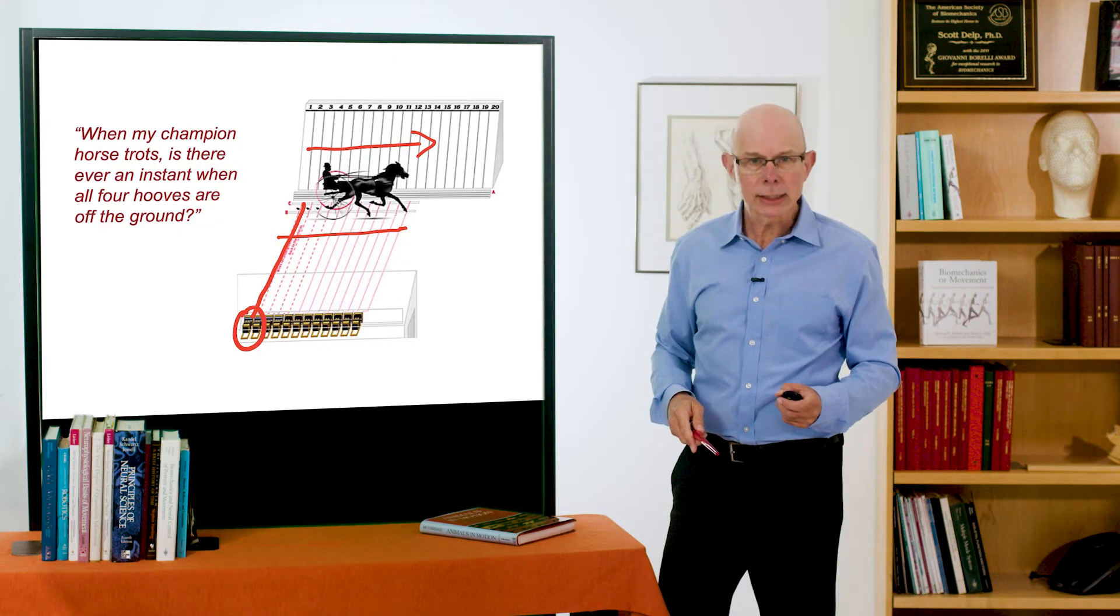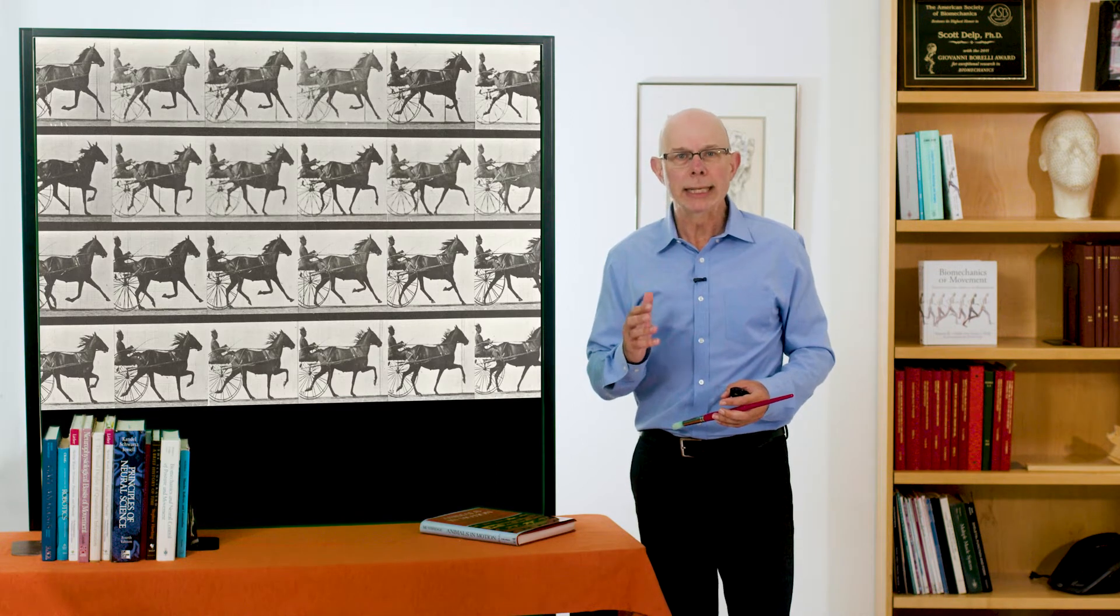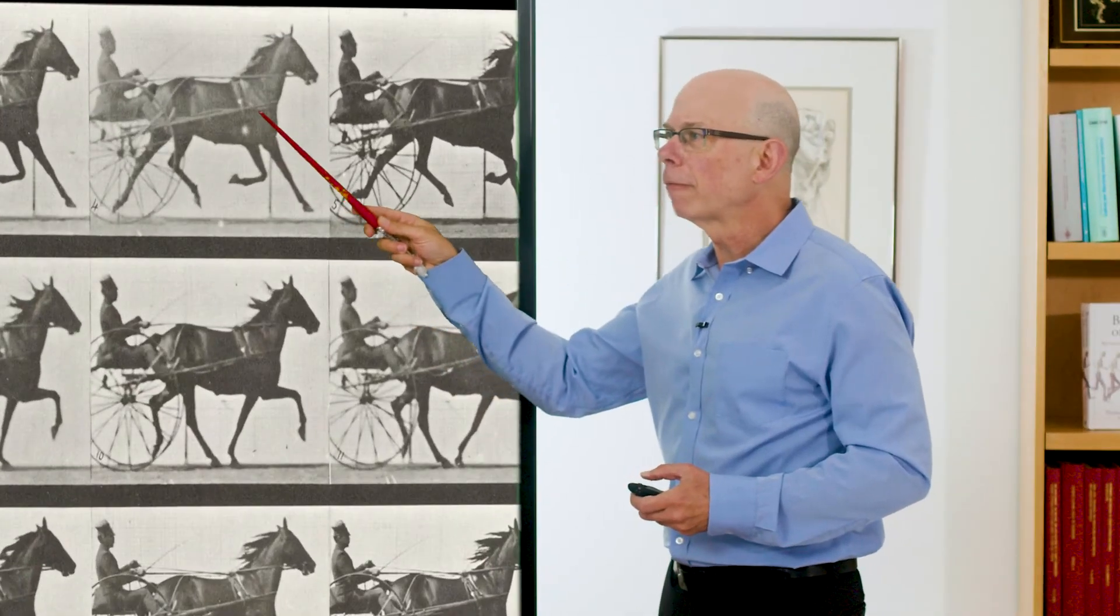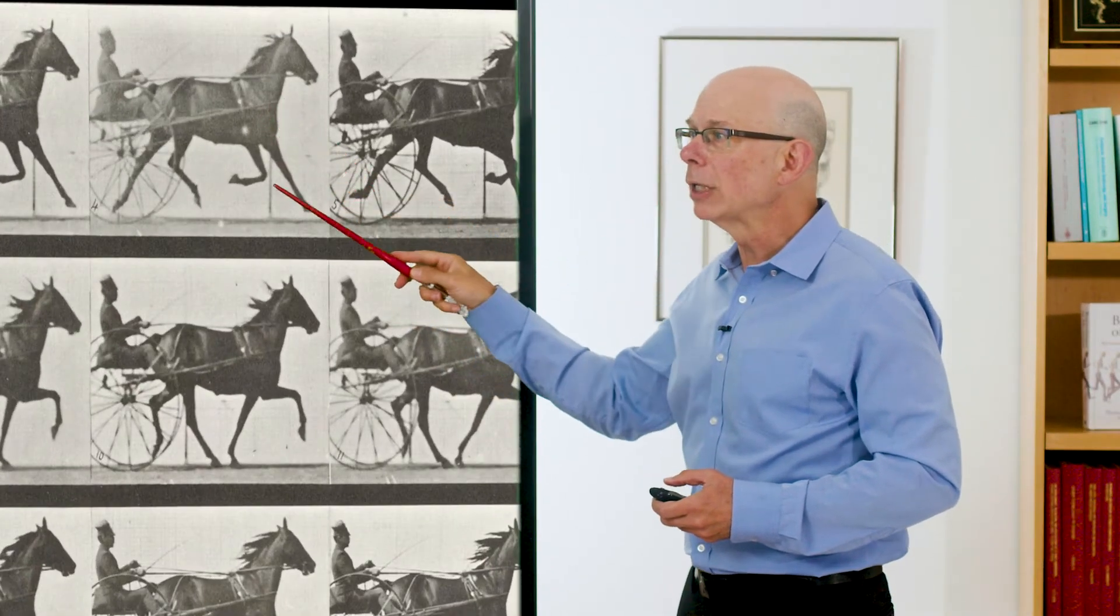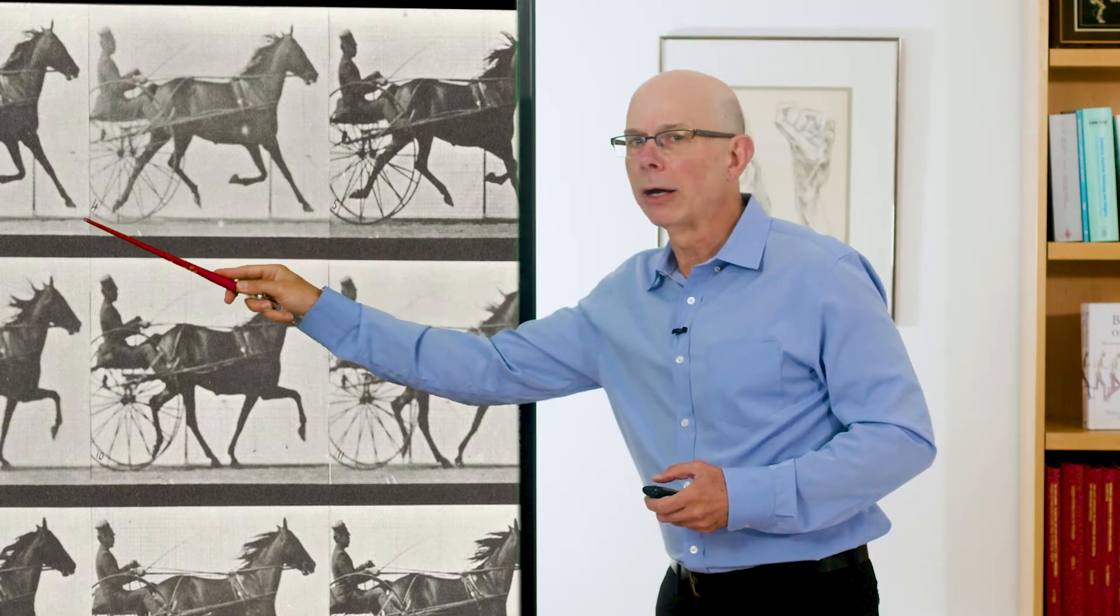His insight was that a sequence of frames on a grid was needed to understand the horse's gait. And if you zoom in on the fourth frame here, you can see indeed there's an instant when all four hooves are off the ground.